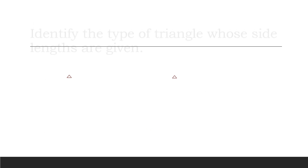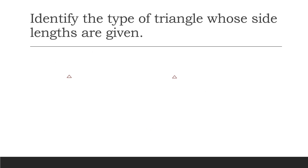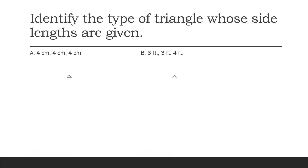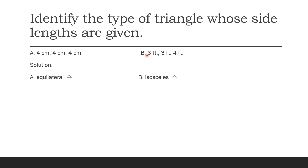Example: Identify the type of triangles whose side lengths are given. A: 4 cm, 4 cm, 4 cm. B: 3 ft, 3 ft, and 4 ft. Solution: Example A is equilateral because all three sides have the same measurement.